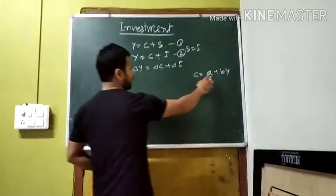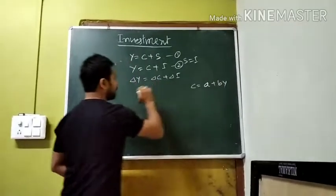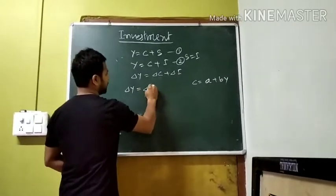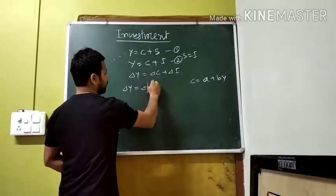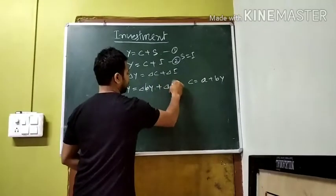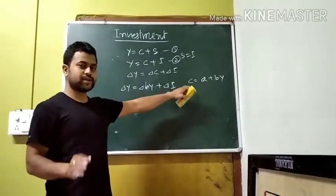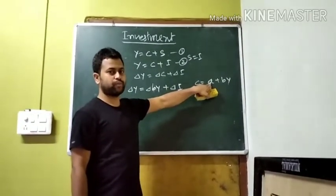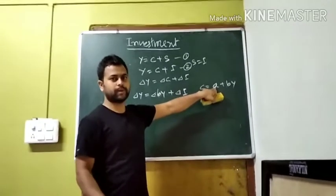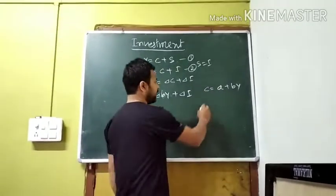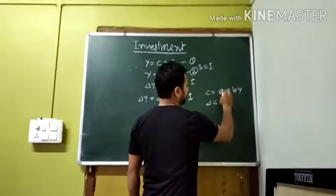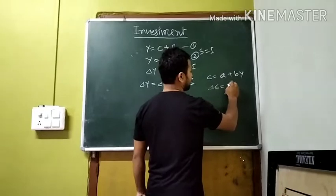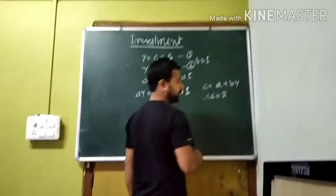So C equals A plus BY. I will derive this mathematically. Del Y equals Del C plus Del I, which becomes Del BY plus Del I. If you rearrange this equation, you get the multiplier formula.